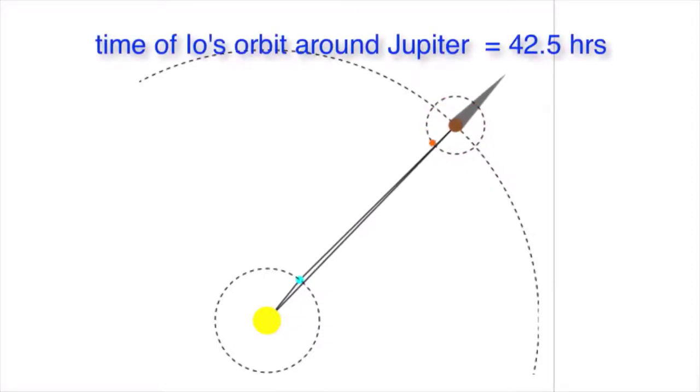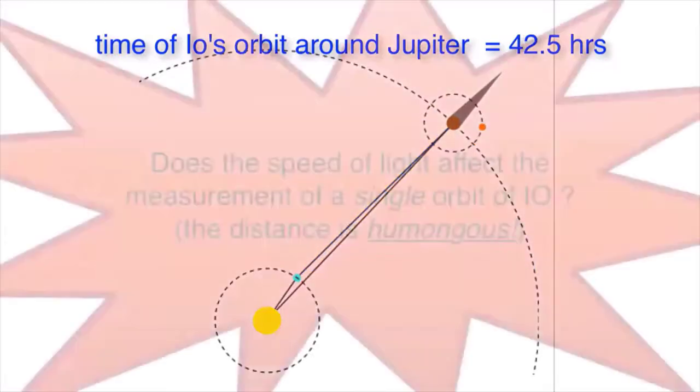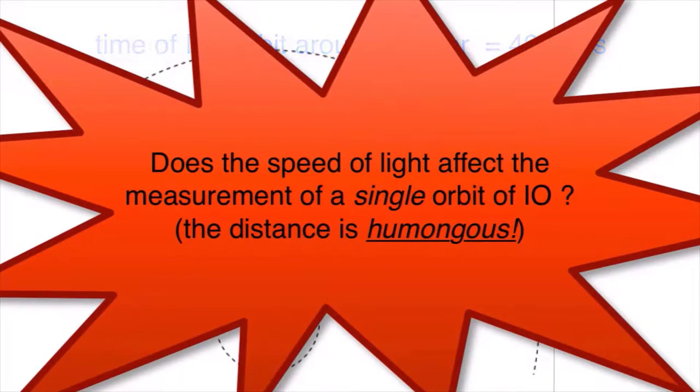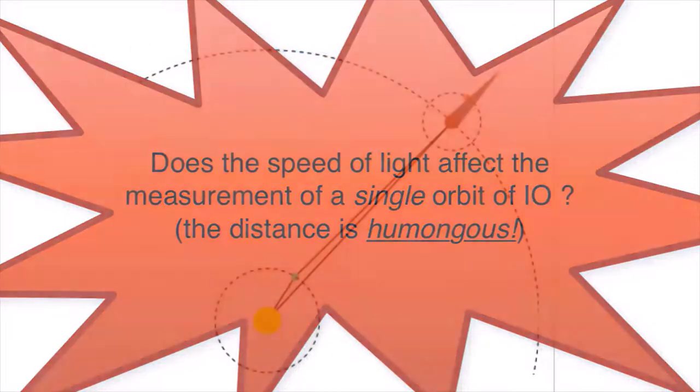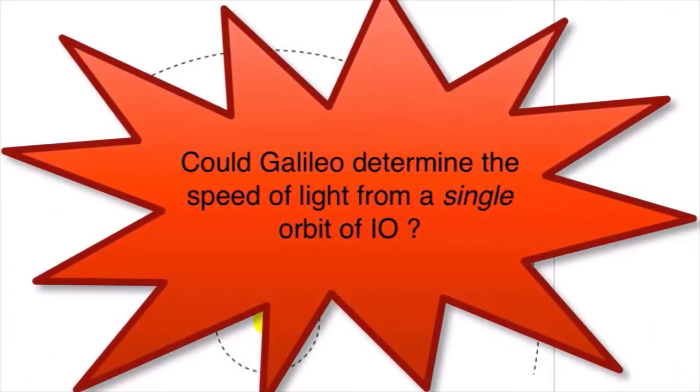Now the distance between the Earth and Jupiter varies between 365 and 601 million miles. Do you think the speed of light affected their measurement of 42.5 hours per orbit? If so, could Galileo use the measurements to determine the speed of light?